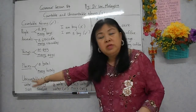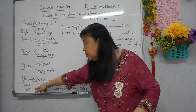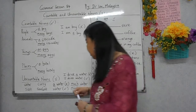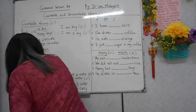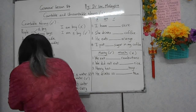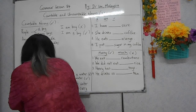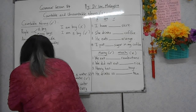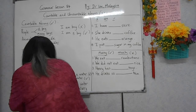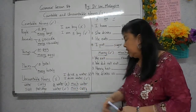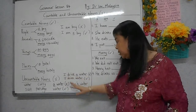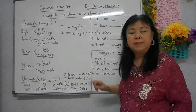Antara contoh benda yang tidak boleh kira: water - air, salt - garam, porridge - bubur. Bubur itu tidak boleh kira. Kita tidak boleh cakap 'a water' - tak boleh. Hanya 'water' sahaja. Atau 'much water', 'much curry' untuk menunjukkan banyak.